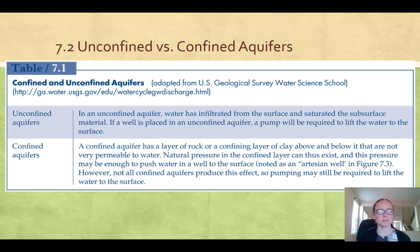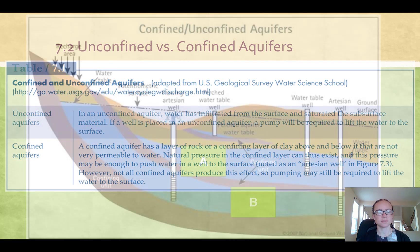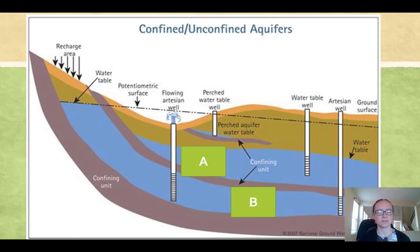Another important terminology for aquifers, besides saturated and unsaturated, is confined and unconfined. I'll give you a little time to read over these definitions in Table 7.1. Here are depictions of confined and unconfined aquifers — try to identify which is confined and unconfined between A and B. An unconfined aquifer is A and confined is B, the one between the layers or a confining unit.